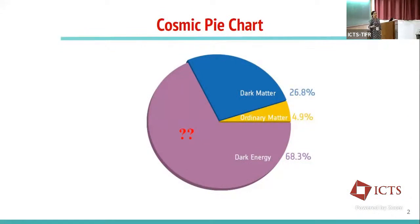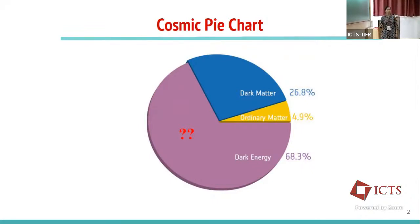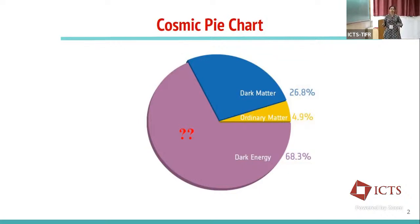I'll be talking about the influence of cosmological perturbation. I'll start with this cosmic pie chart we have seen many times. Since yesterday we were going through talks mainly concentrating on the dark matter sector, but in our dark universe we have another dominating component which also comprises a large fraction of the dark component, and that we term it as dark energy.